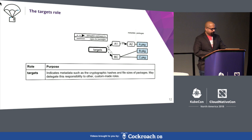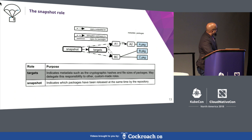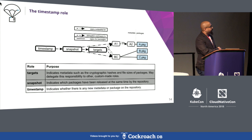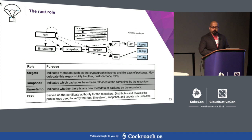The snapshot role indicates which packages have been released together at the same time by different developers on the repository. Building on top of that, the timestamp role provides a quick summary of whether any metadata or package has been updated on the repository at all. Finally, the root role acts as the root of trust for the whole system and distributes the public keys for all four top-level roles, including itself.